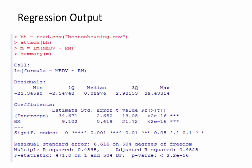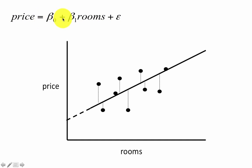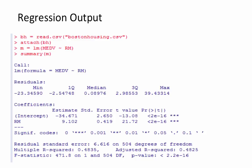If you run linear regression in R, this is the kind of output you get. For now, let's focus on the coefficients. In the linear regression model, the target attribute price is represented as beta-zero plus beta-one times the number of rooms, which is the predictor attribute, plus a residual value. This is the actual target attribute, and the residual is also included. What you want to do in linear regression is find the values of these coefficients, beta-zero and beta-one.